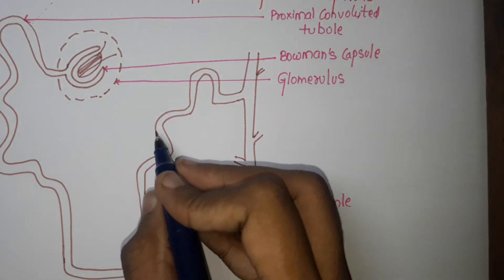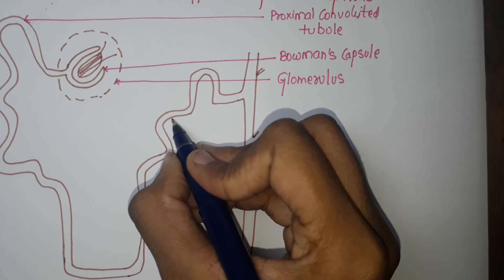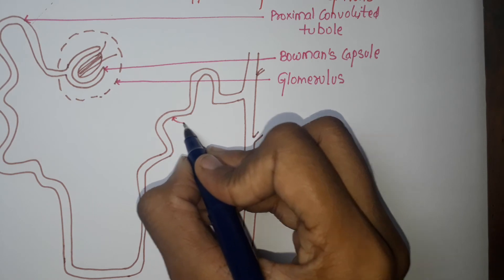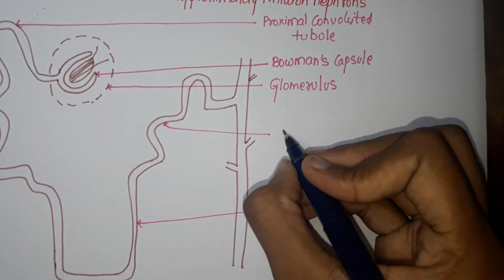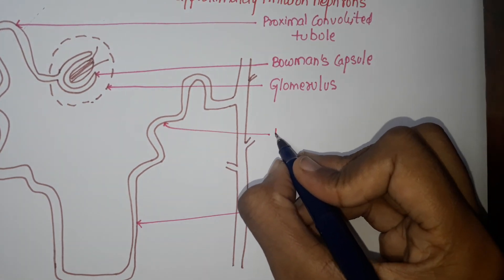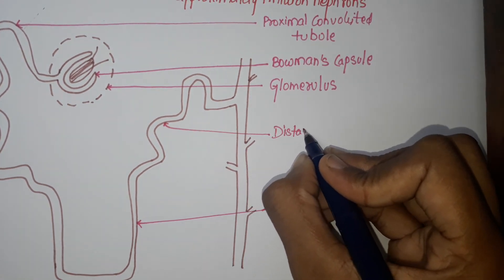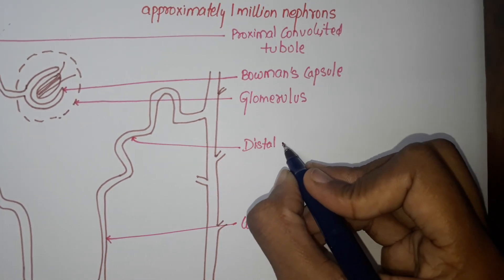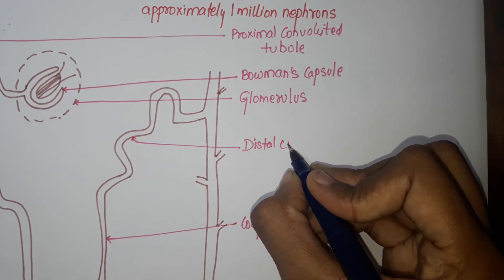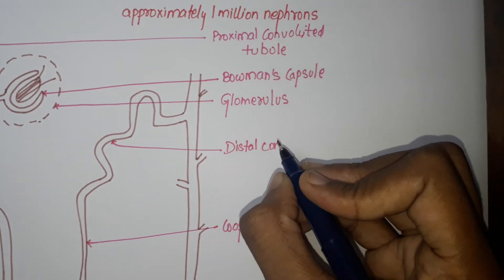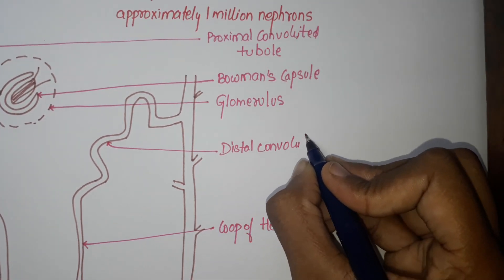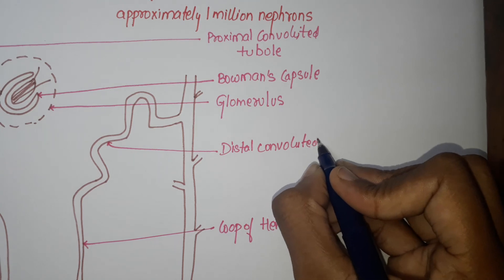Then we move and we get this one — this is the distal convoluted tubule.